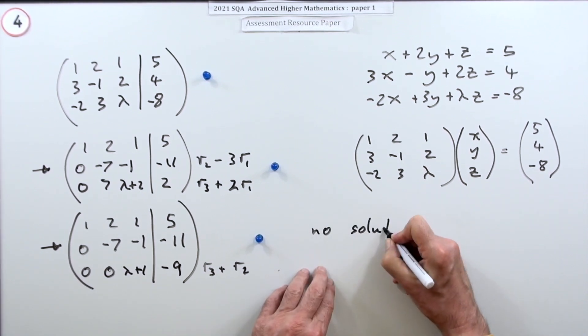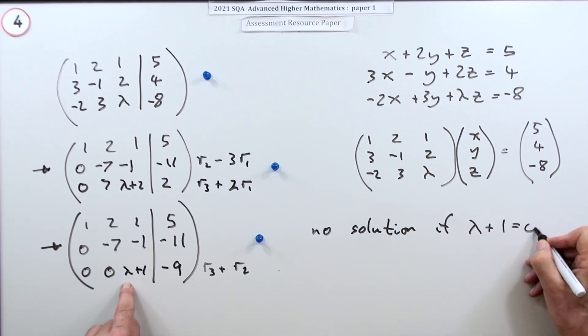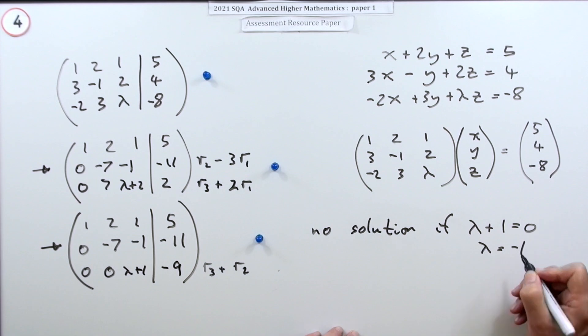So the final part would be, there's no solution if this comes to zero. In other words, if lambda is negative one.